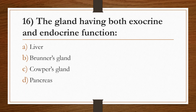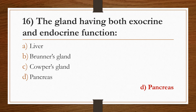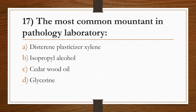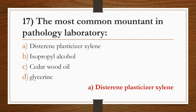Sixteenth question: the gland having both exocrine and endocrine function. Option A: Liver. Option B: Brunner's gland. Option C: Cowper's gland. Option D: Pancreas. Answer is Option D, Pancreas. Seventeenth question: the most common mountant in pathology laboratory. Option A: Distrene plasticizer xylene, that is DPX. Option B: Isopropyl alcohol. Option C: Cedar wood oil. Option D: Glycerine. Answer is Option A, DPX — Distrene plasticizer xylene.